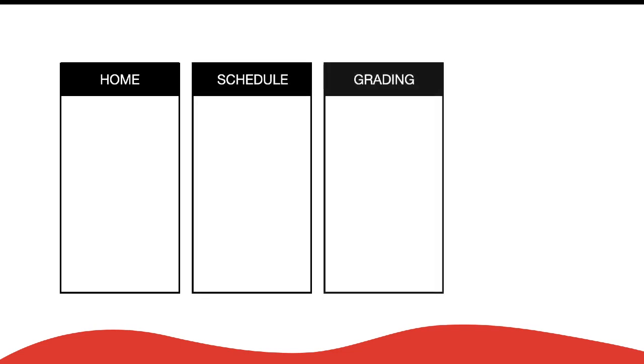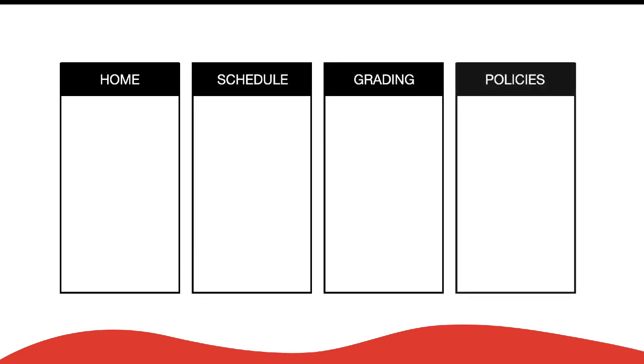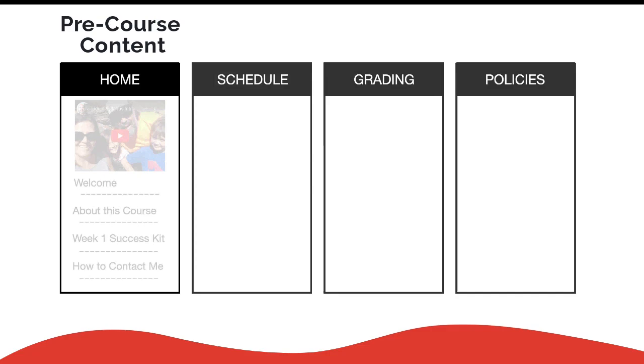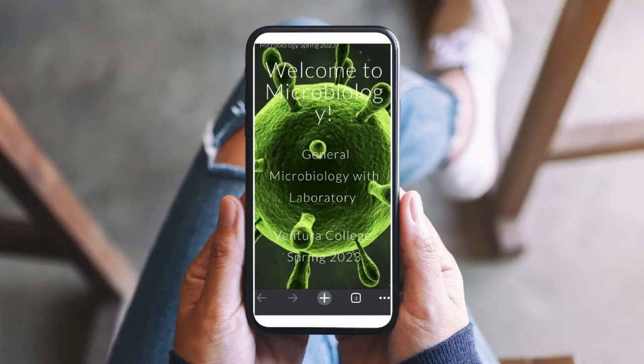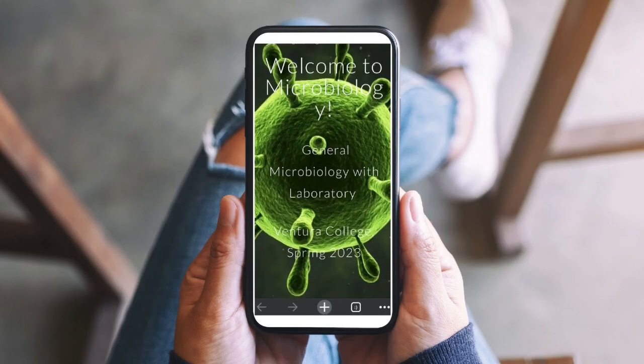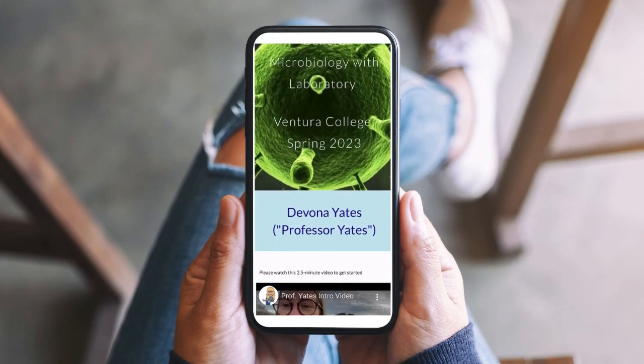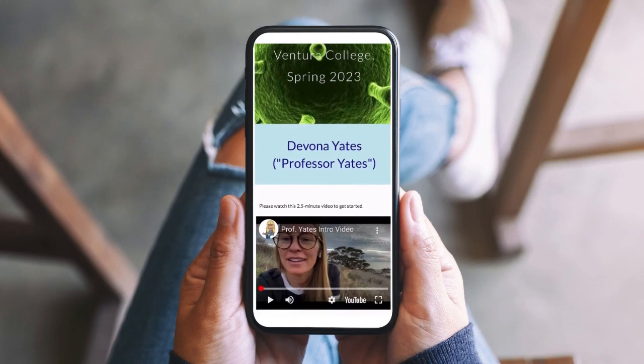While your liquid syllabus may end up including multiple pages, in the Academy you'll only develop your home page — the one page your students will see before your class starts.